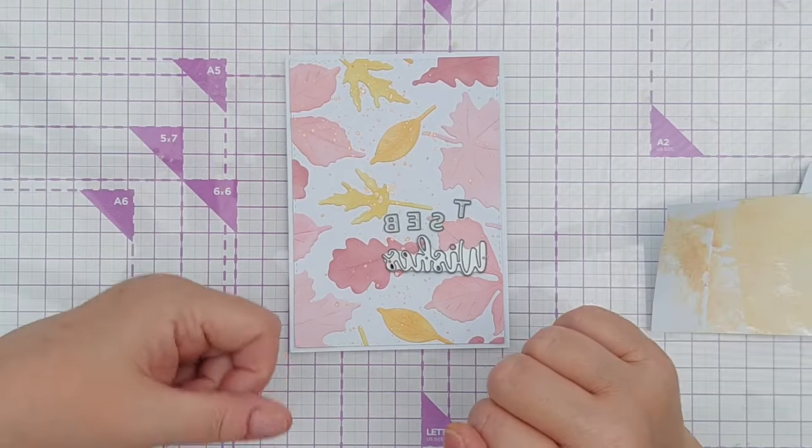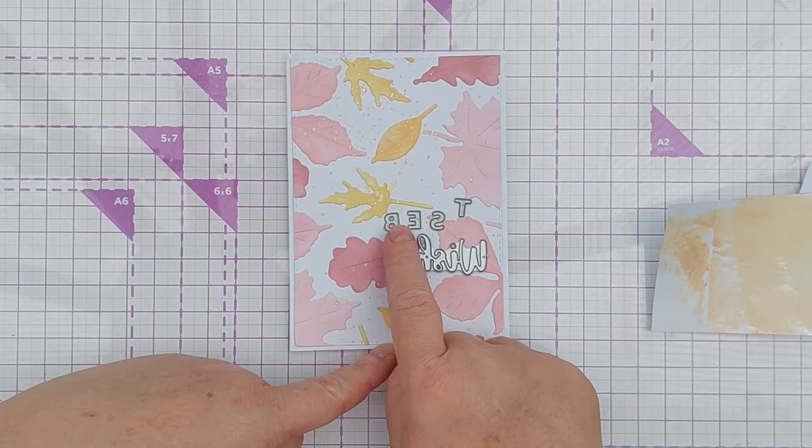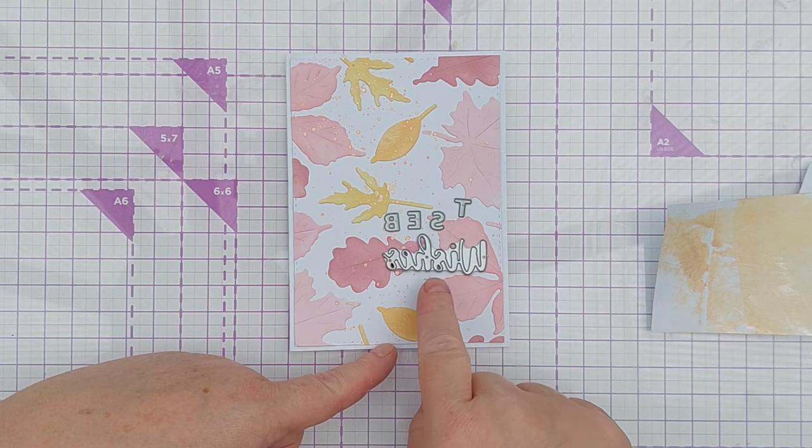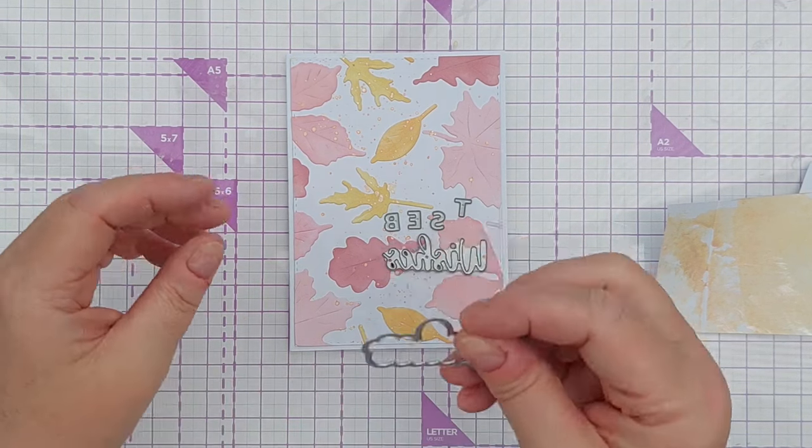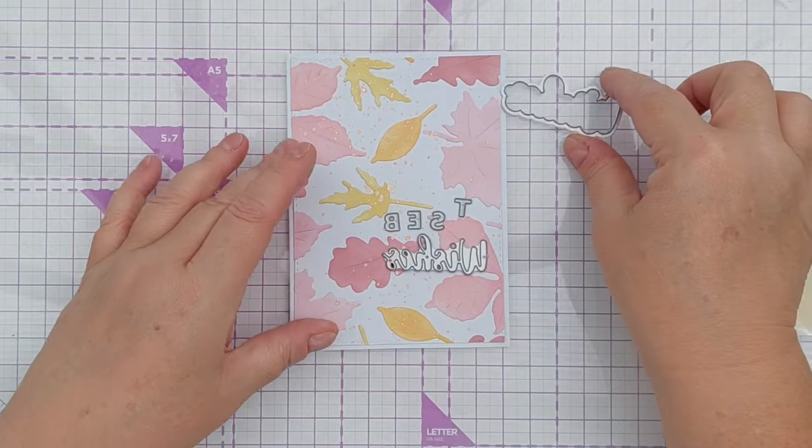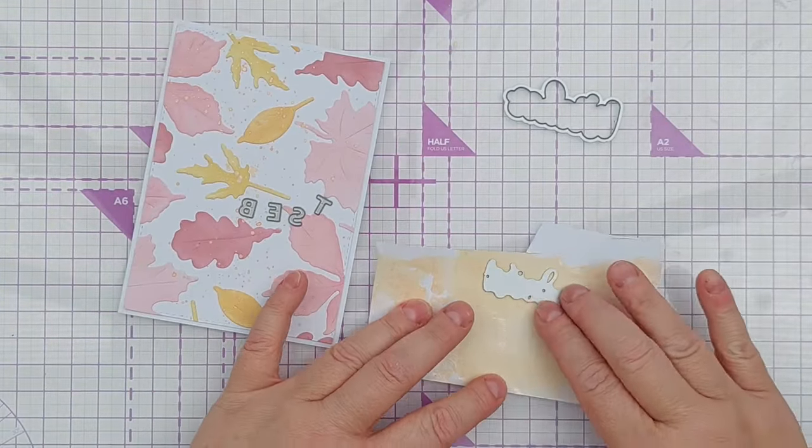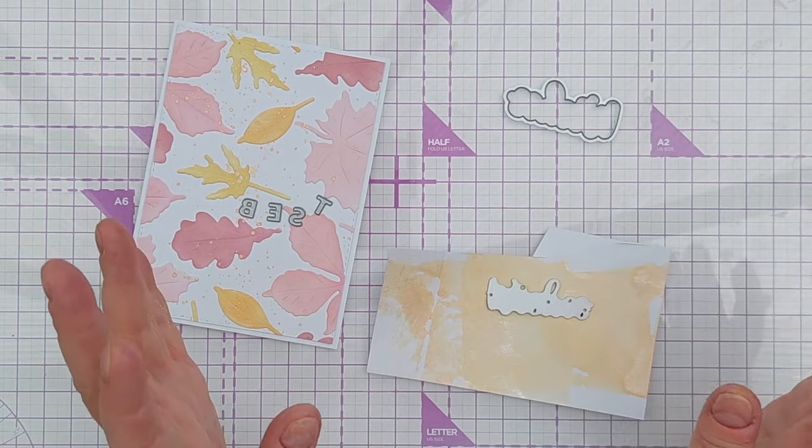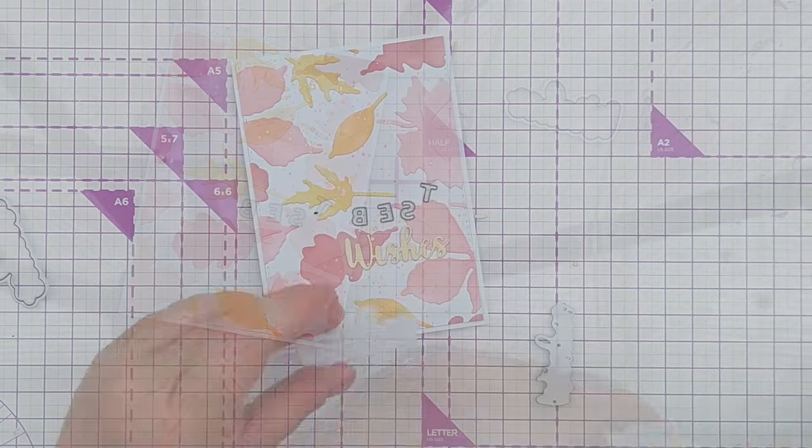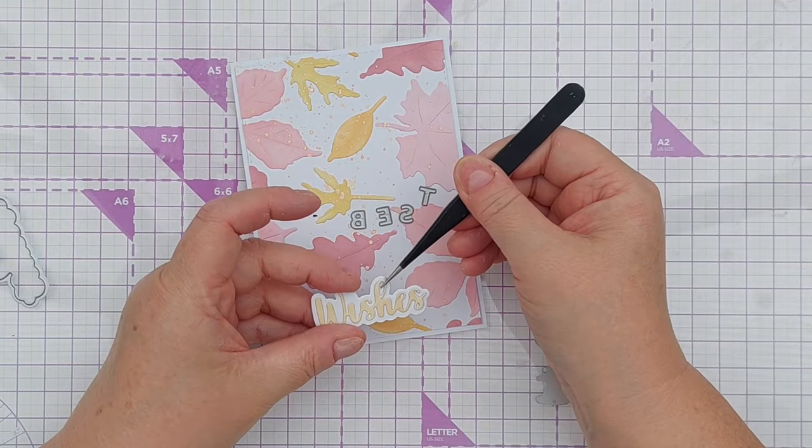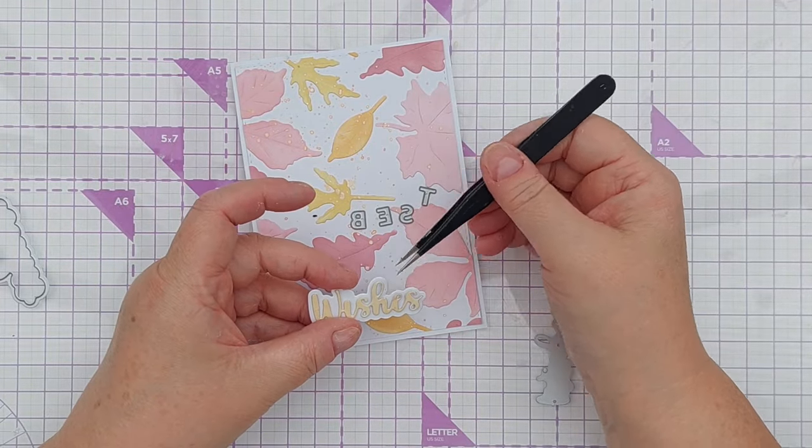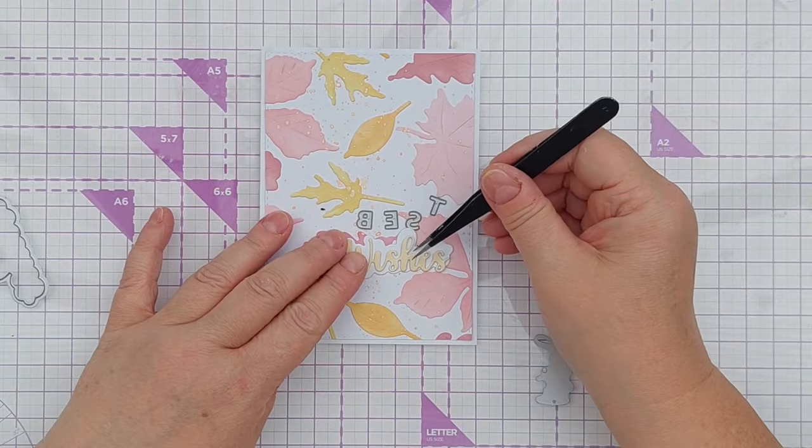For my sentiment I'm thinking best wishes. I've got the word best in these small alphabet dies and wishes in this script word die. The word die also has a shadow so I'm thinking I might cut the word wishes from this. I'm not sure if it's going to be dark enough but we'll give it a go. So I've got a white shadow or outline and the word wishes there. I'm thinking it's a little bit pale.